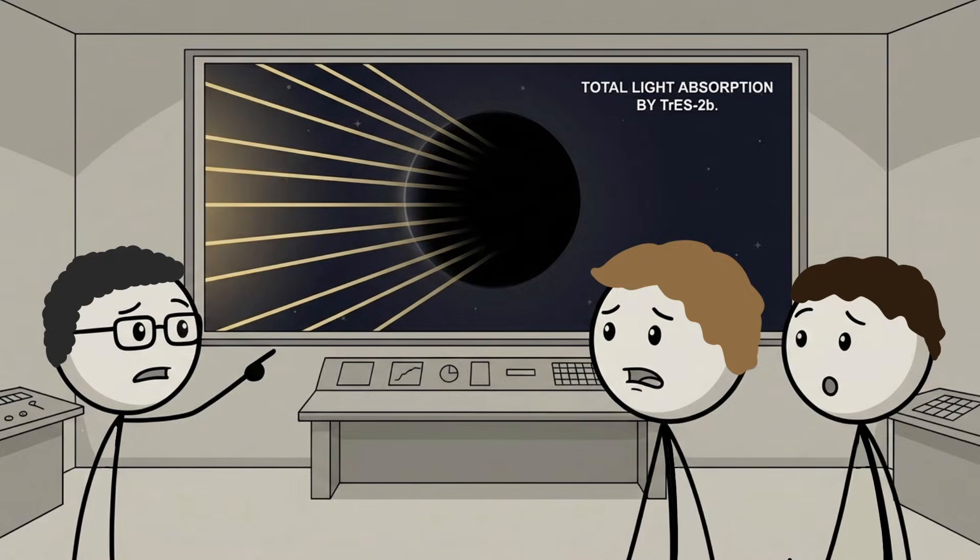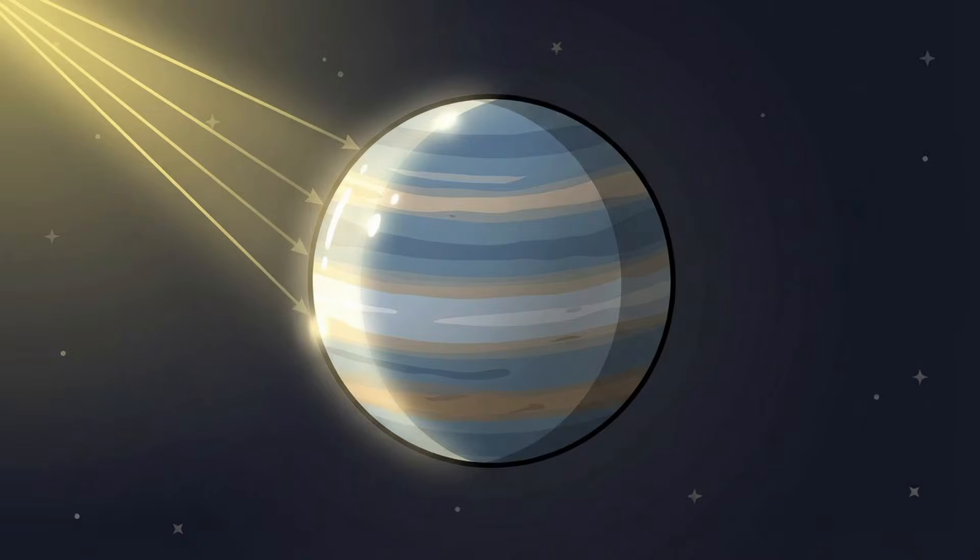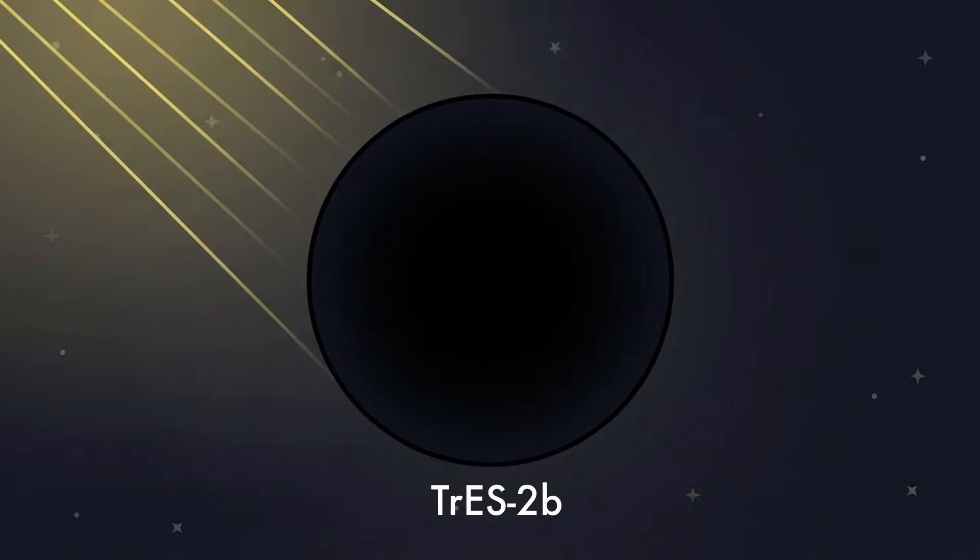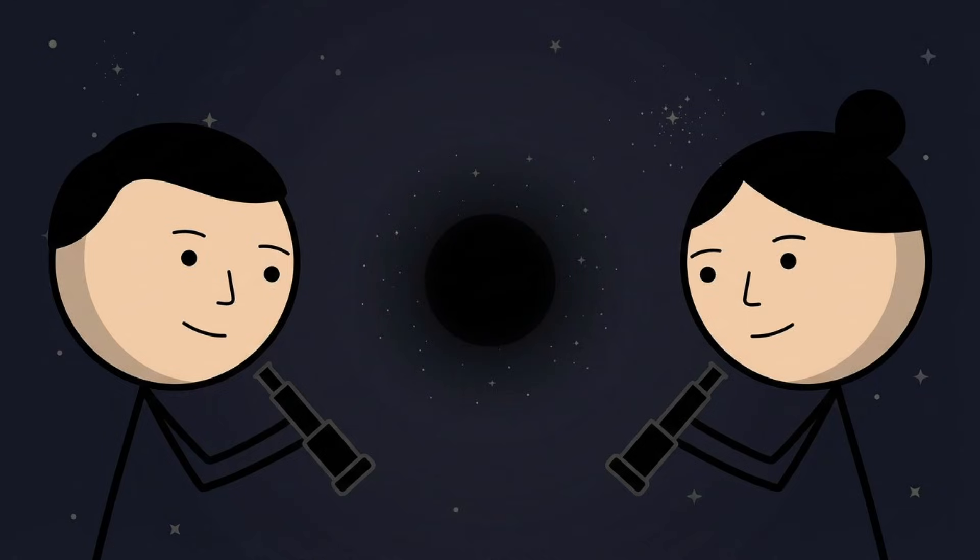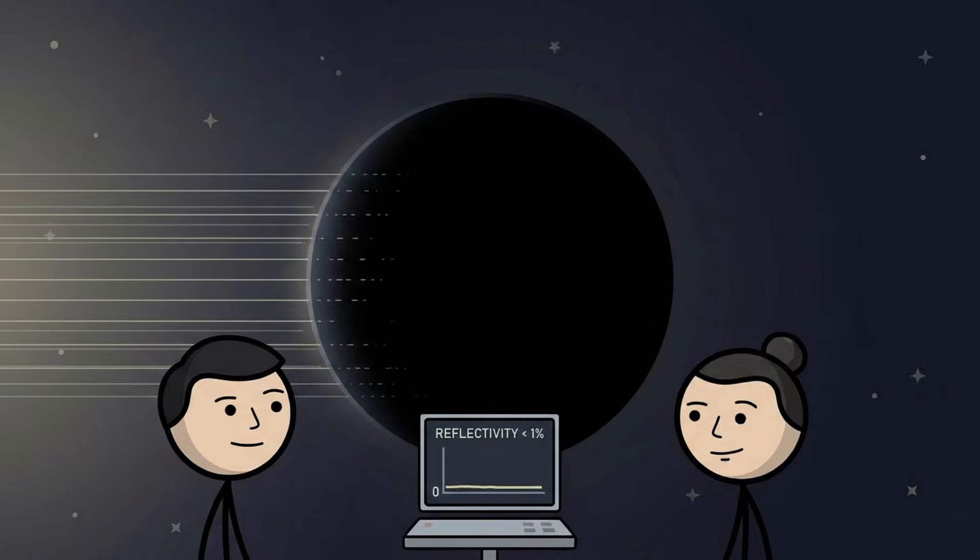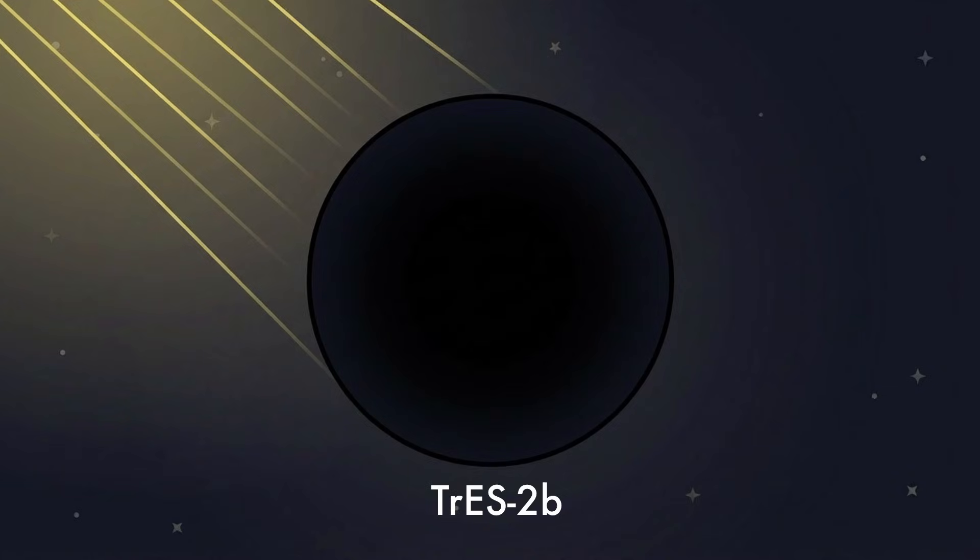TRES-2b is weird because it violates a basic expectation. Planets are supposed to shine when illuminated. This one does not. It behaves less like a world and more like a void with mass. Astronomers are not observing darkness caused by empty space, but darkness created by a planet designed by physics to absorb nearly all the light that touches it.